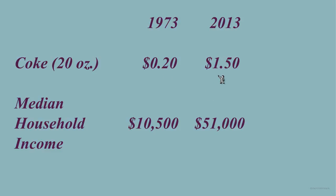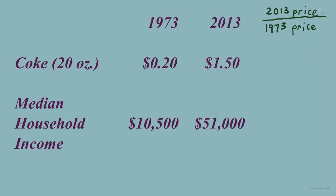Has the price increased a lot higher than the increase in what people are making? If we want to compare these numbers over time, we can use a fraction. Let's compare the price of Coke in 2013 to the price in 1973 — $1.50 to 20 cents — setting up the 2013 price in the numerator and the 1973 price in the denominator. This fraction equals 7.5.